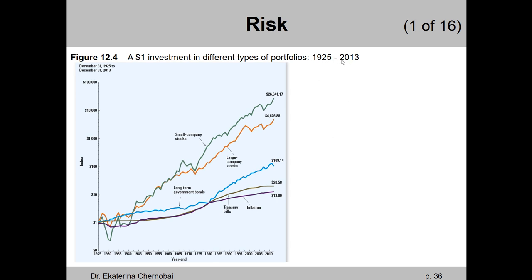Over this 88-year period, we saw on earlier slides that the small company stock line — the green line — is the steepest, implying the highest average annual return. The second highest average annual return was for the orange line, large company stocks, and so on.